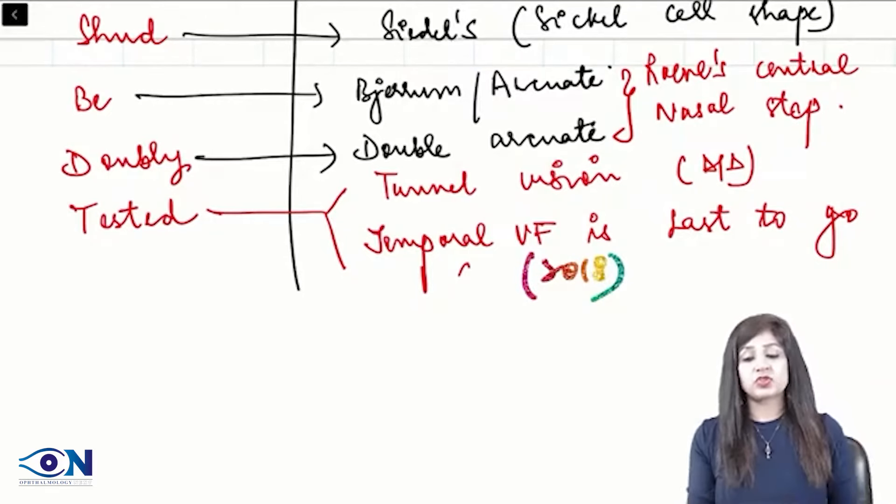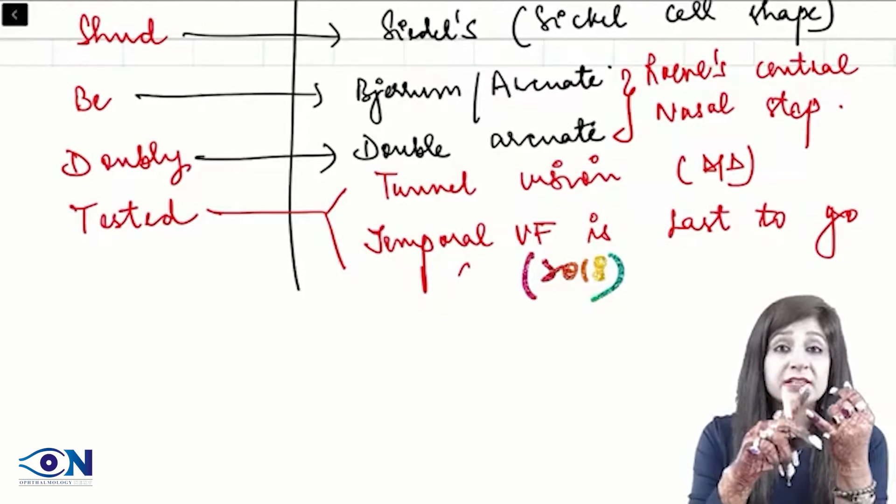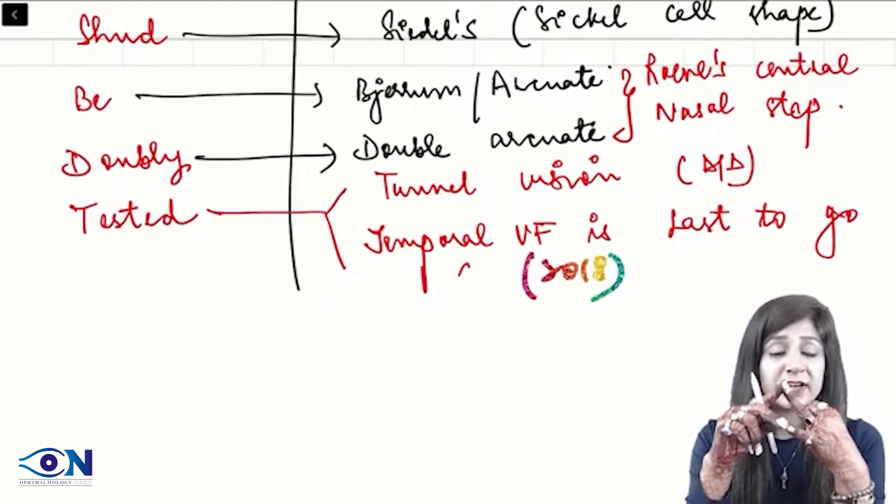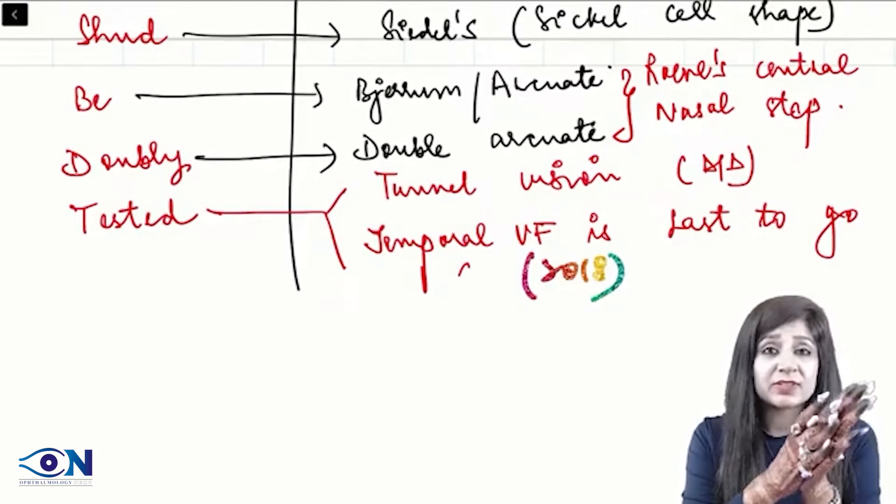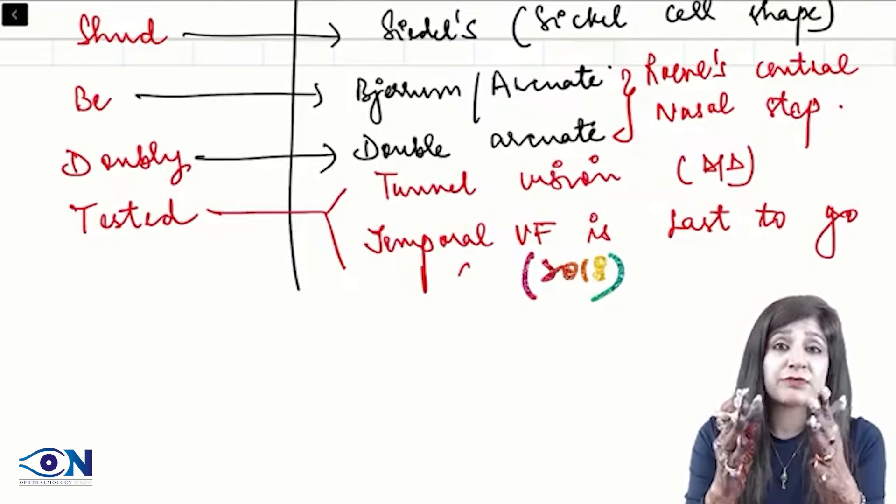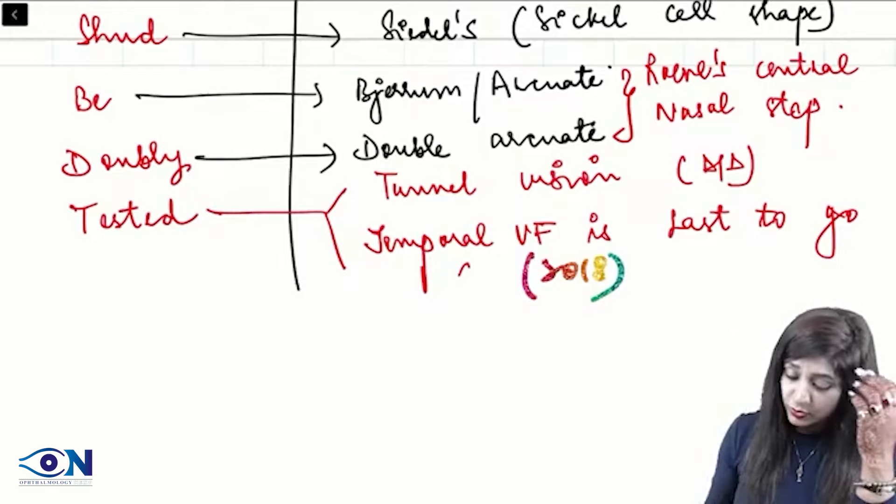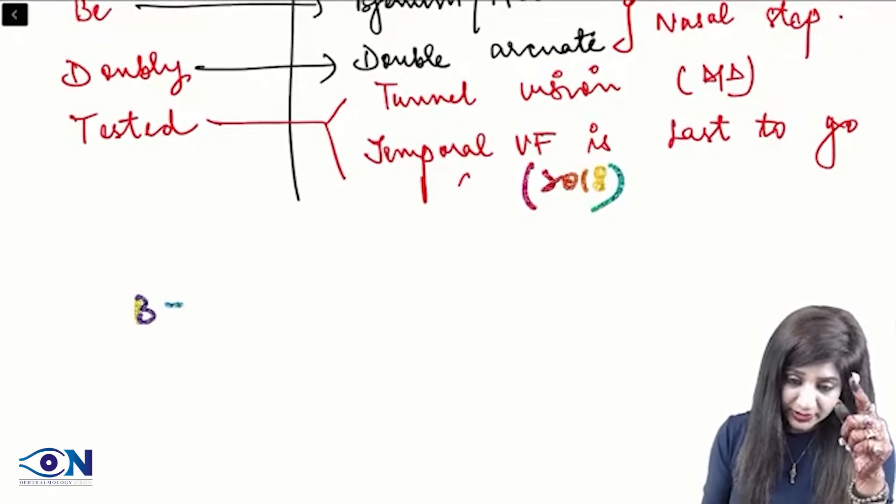So, there are so many questions that can be solved from here. You can see Ronne's central nasal step is also PYQ. Temporal field is last to go. Which one is first to go? Then we have Bjerrum's area. We have various visual field defects. Then we have sickle cell shape defect. And whole of the order also. And even you should also know the Bjerrum's area.